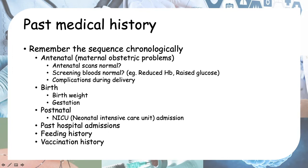For antenatal history, ask the mother if she had any obstetric problems during pregnancy. Specific questions include: were the antenatal scans normal? Were the screening bloods normal — hemoglobin, glucose levels? Were there any complications during delivery, such as excessive blood loss, prolonged labour, or the need for instruments like forceps or vacuum delivery?